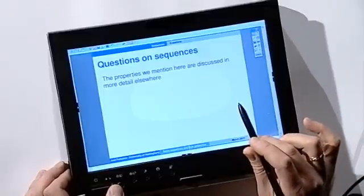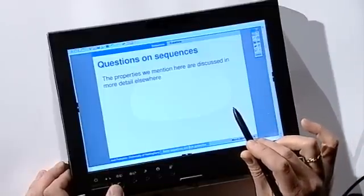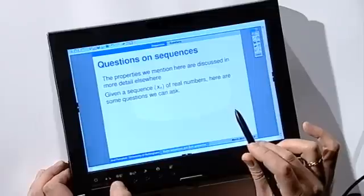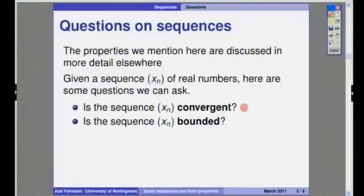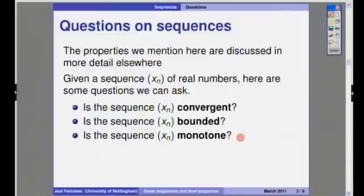So let's start by looking at some of the questions we can ask about sequences of real numbers. Now I'm not going to go into too much detail about these properties which are discussed in more detail elsewhere, but here are some questions we can ask. First question, is the sequence xn convergent? If it isn't convergent then we'll say it's divergent, that's the opposite of convergent. Another question we could ask is, is the sequence xn bounded? If it's not bounded that means it's unbounded. And finally, is the sequence monotone? And if it isn't then we'll just say it's not monotone.